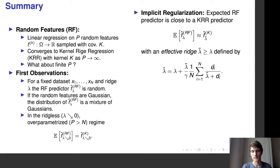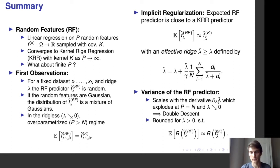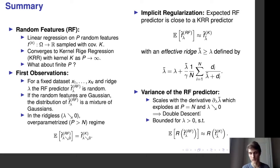Now that we have described the expected random feature predictor, the next thing is to show the variance. The variance of the random feature predictor scales with the derivative of the effective ridge, so the effective ridge plays an important role in studying the variance. This derivative explodes when p equals n and λ goes to zero, leading to an explosion of variance, which causes the double descent phenomenon observed in random features.